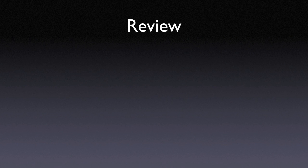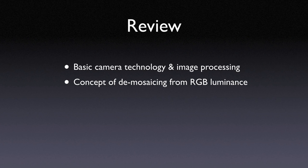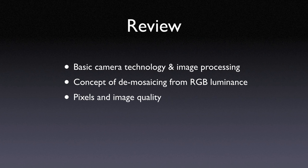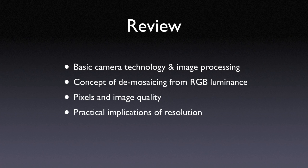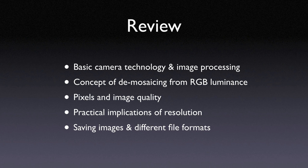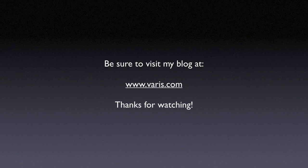As a review: we covered basic camera technology and image processing, how cameras capture luminance information through red, green, and blue filters, and how full color is interpolated from this luminance data with a demosaicing algorithm. We looked at the nature of pixels and how image quality is derived from having small enough pixels that we are not aware of them in an image viewed at an appropriate size and distance. We saw how resolution is expressed as pixel density per unit of measure and what types of outputs require what resolutions. Finally, we went over the basic file formats used by photographers and the merits of each for various applications. Thank you for watching — be sure to visit my blog for free tutorials, and I have a large archive of useful articles on my website at www.varis.com.